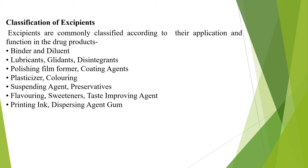These are the classifications of excipients. Excipients are commonly classified according to their application and functions in drug products. First, binders and diluents, also known as fillers. Lubricants, glidants, disintegrants, film formers and coating agents used for coating tablets and capsules. Also: plasticizers, coloring agents, suspending agents, preservatives, flavoring, sweeteners, paste improvement agents, printing ink, dispersing agents, and gums. These are all excipients commonly used in formulation of tablets, capsules, liquid syrups, semi-solid dosage forms, lotions, and herbal products.